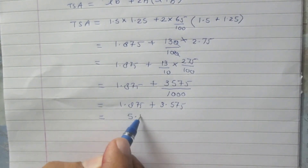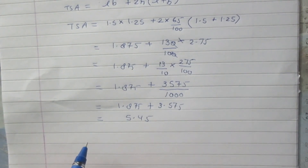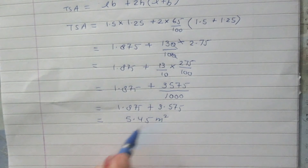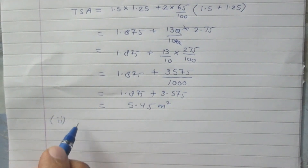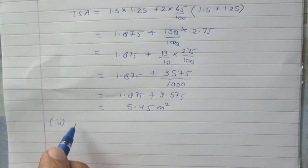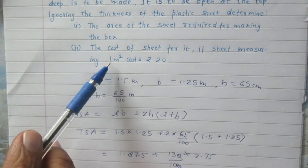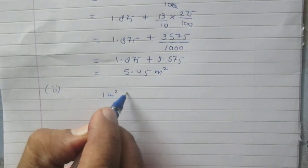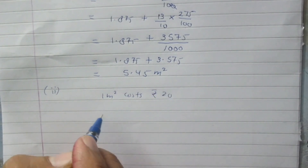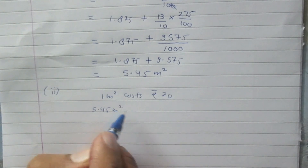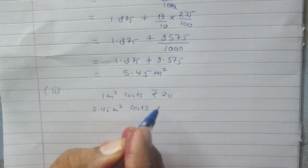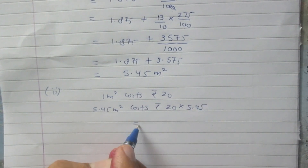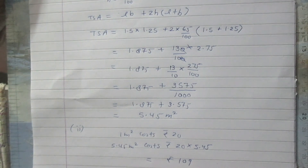We get 5.45, so we can say that the area of the plastic box without top is 5.45 m². In the second part, we are to find the cost of the plastic box. We are given that 1 m² costs Rs 20, so 5.45 m² costs Rs 20 × 5.45, which gives Rs 109.